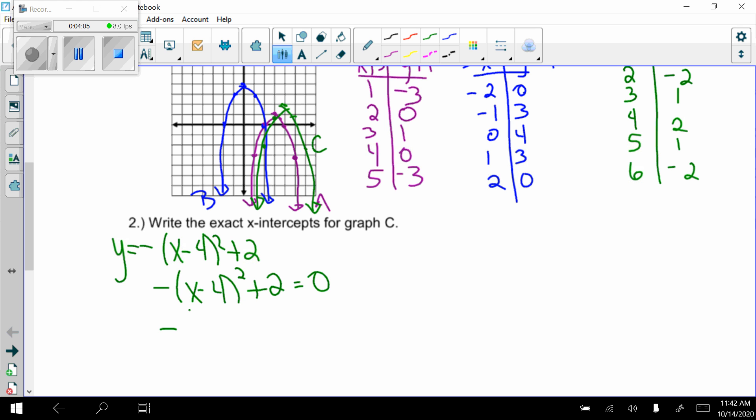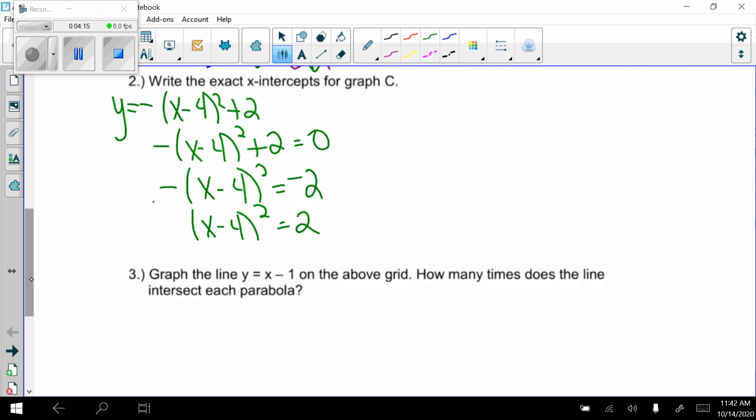Move my 2 over. So negative x minus 4 quantity squared equals negative 2. Divide both sides by negative to get rid of that negative. x minus 4 quantity squared equals positive 2. Take the square root of both sides. So now I have x minus 4 equals positive and negative square root of 2. And finally add 4. So x equals 4 plus or minus the square root of 2. Those are the two exact x-intercepts.